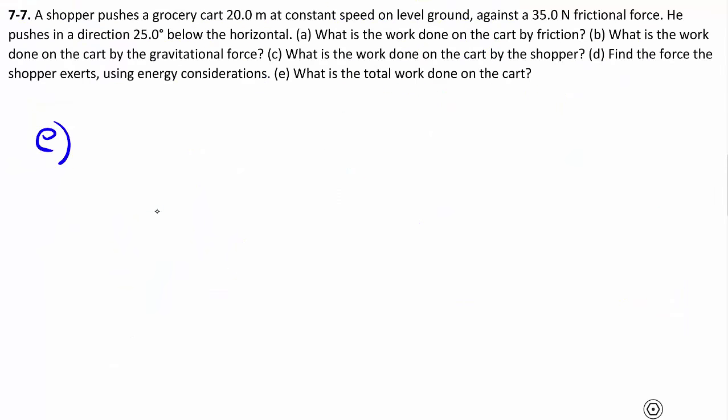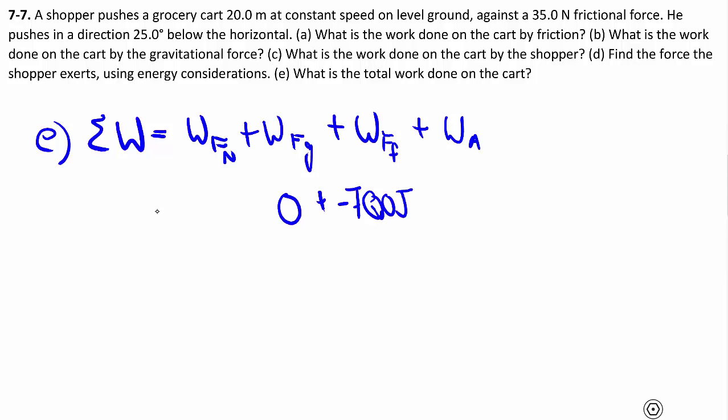In part E, what is the total work done on the cart? To find the total work done, you want to find the work of all your many forces. We have the normal force, gravitational force, friction force, and applied force. Some of these we've worked out already. From part B we got zero, from part A we got negative 700 joules, and we got positive 700 joules.